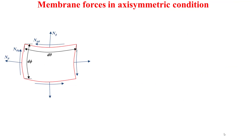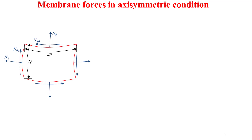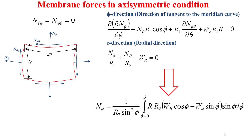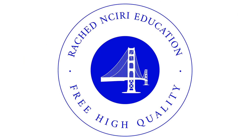Now I'll talk about the expressions of membrane forces in axisymmetric conditions. The twisting membrane forces N theta phi and N phi theta equal zero. Based on the two remaining equilibrium equations along the phi and r directions, we can determine the membrane force N phi and the membrane force N theta using the formulas shown in this slide. That's all for this educational video — please mention any suggestions, remarks, or questions in the comments. Thank you very much for your attention.